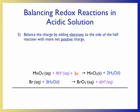For the second half-reaction, the left-hand side has a net charge of −1 from the bromide ion, while the right-hand side has a net charge of +5: −1 from the bromite ion plus +6 from the six H+ ions gives −1 + 6 = +5. To equalize the charges, we add six electrons to the right-hand side, completely canceling the positive charge from the hydrogen ions. The net charge on both sides of the second half-reaction is now −1.